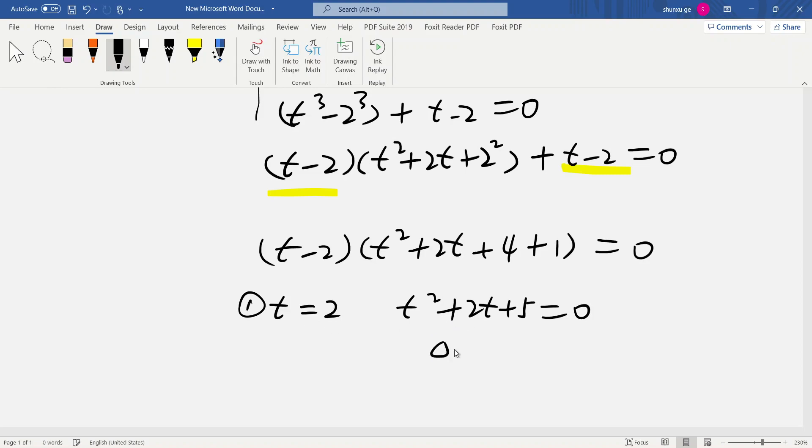So here we find delta equals 2^2 - 4×1×5 = 4 - 4×5 = 4 - 20 less than 0, no real solution.